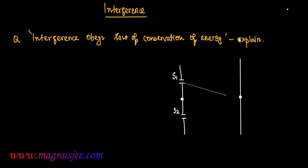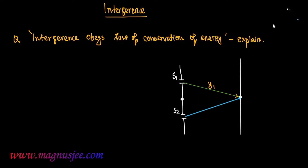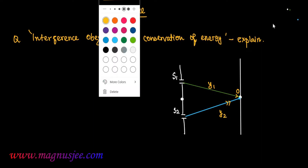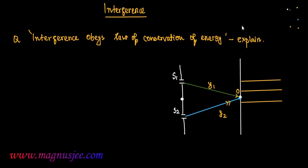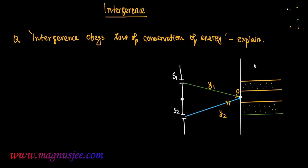S1 and S2 are the two coherent sources. From these two coherent sources, light waves Y1 and Y2 superimpose one another at the point O on the screen. Y1 and Y2 are the two interfering light waves which superimpose at point O, which is directly opposite the midpoint between S1 and S2. In this way, a bright fringe is formed at O and dark fringes are formed elsewhere.